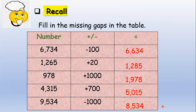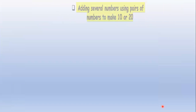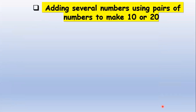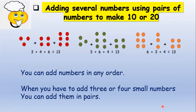If you got all the correct answers, you are very good. Now let's go to our main lesson: adding several numbers. Look at this illustration. Each bead represents a number. For example, 3 plus 4 plus 6 equals 13, then 3 plus 6 plus 4 equals 13, and 6 plus 3 plus 4 equals 13. This only shows that you can add numbers in any order and still get the same answer. When you have to add three or four small numbers, you can add them in pairs.